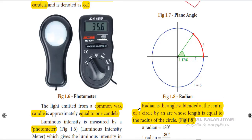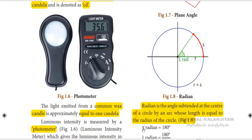The next one is radian. What is radian? Radian is the angle subtended at the center of a circle by an arc whose length is equal to the radius of the circle. We can understand the meaning of radian by using this diagram.